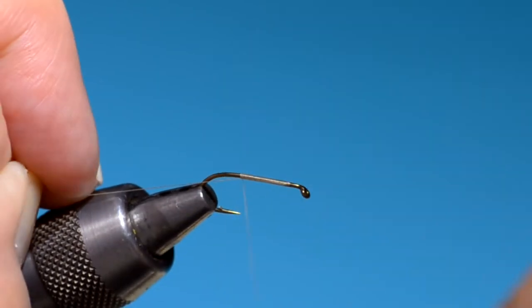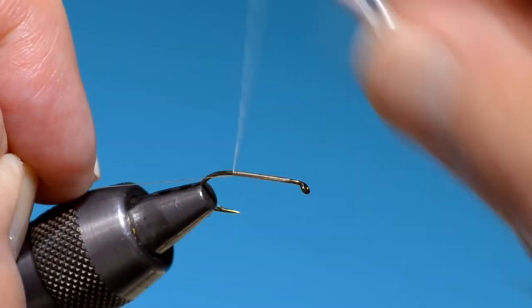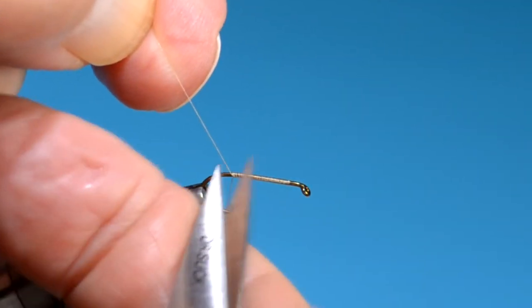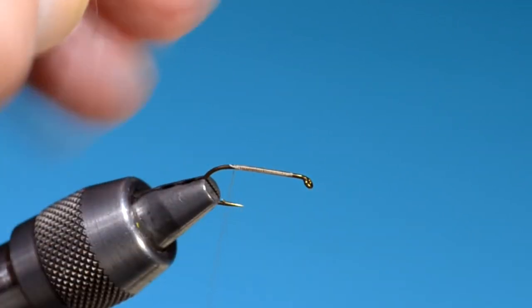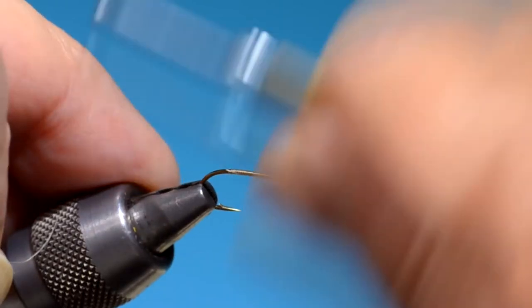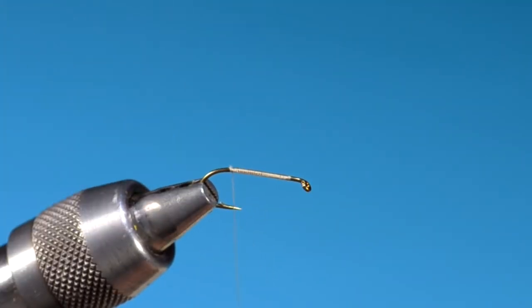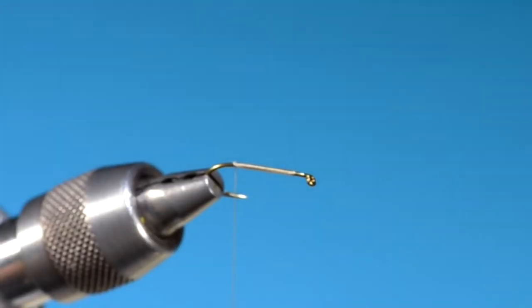I always leave a little bare hook right up behind the eye. That's a habit from tying Cahill flies for years, but it's a good habit. It just cuts down bulk at the head.